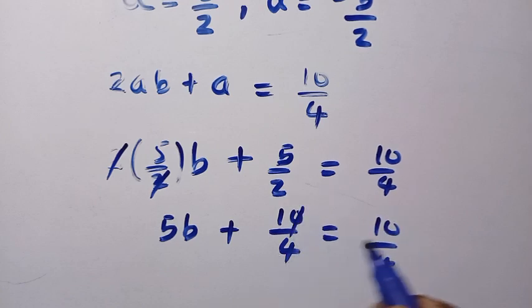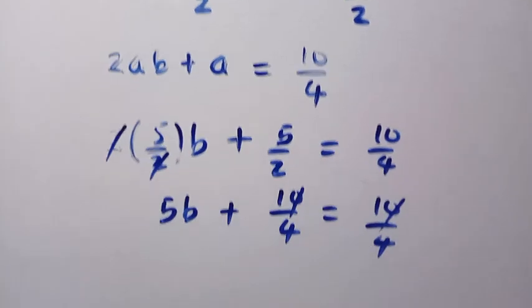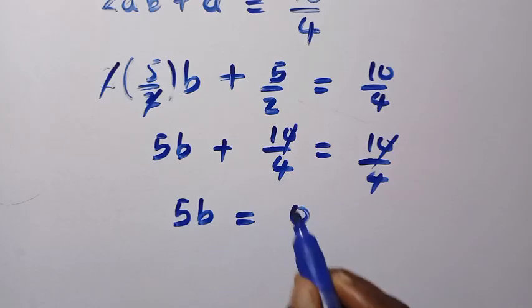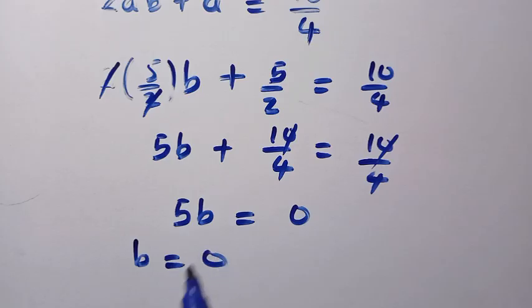So 10 over 4 cancels 10 over 4 here. And we have 5b equals 0. If 5b equals 0, definitely our b here equals 0. So to cut the story short, when b equals 0, it means that our a will be 5 over 2.